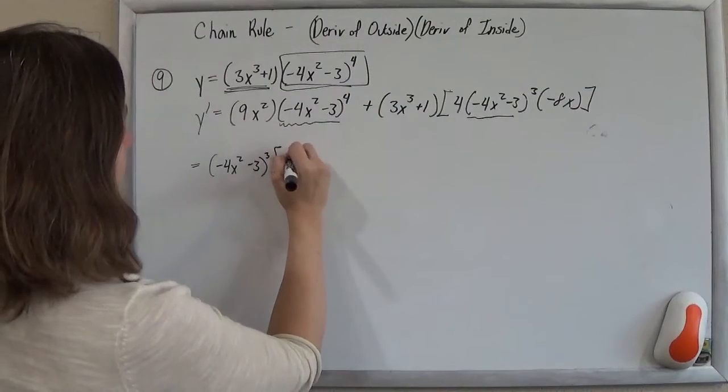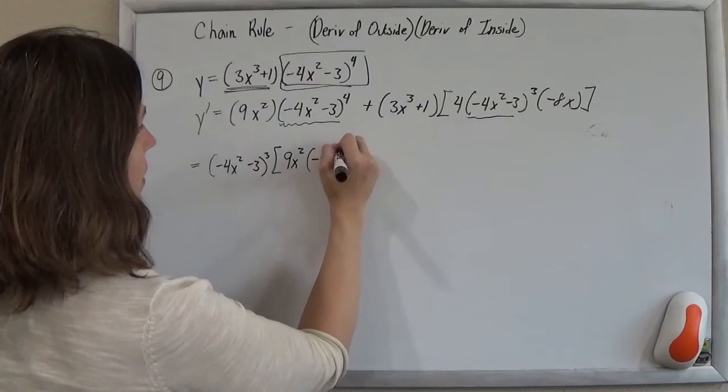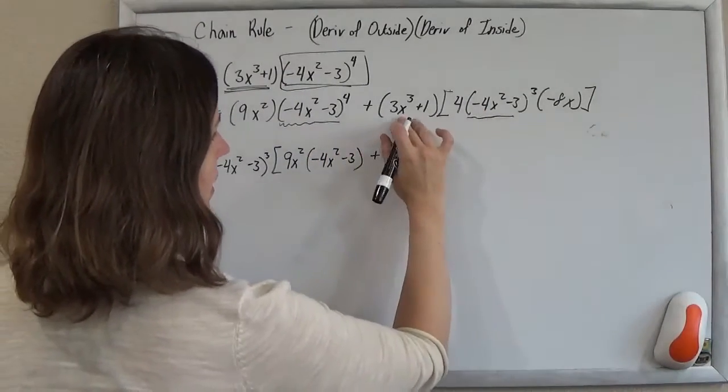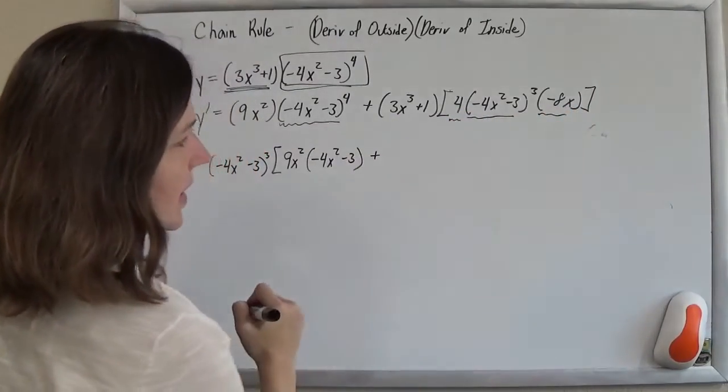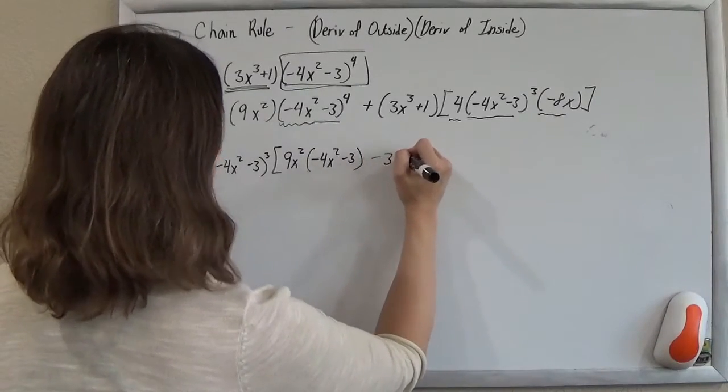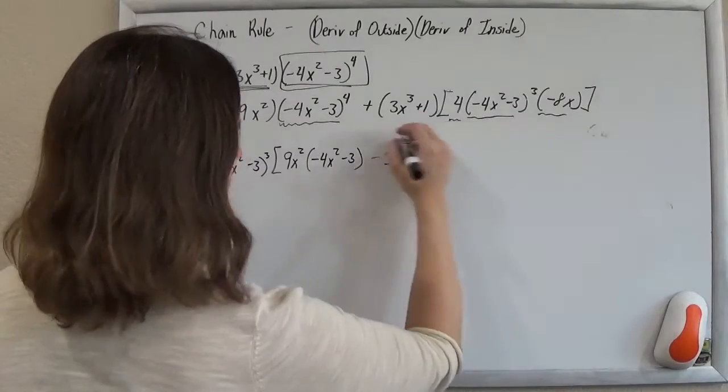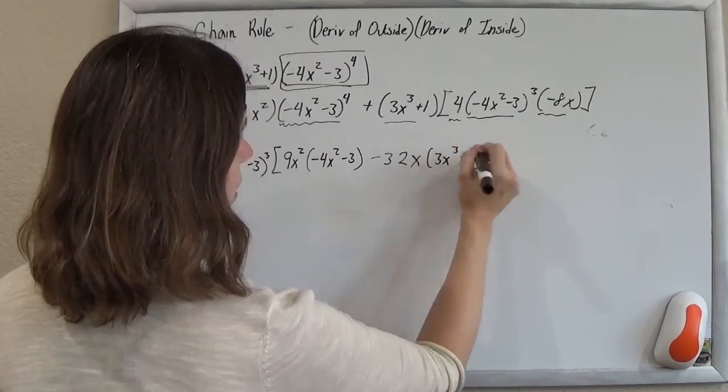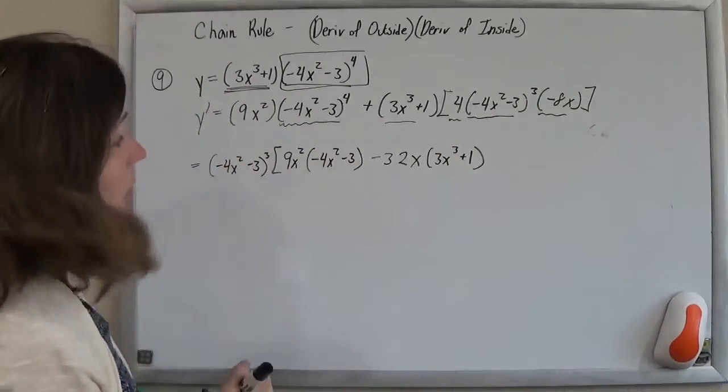And I'll have one more left over there. And then in this piece, I'll still have 4 times negative 8x is going to be negative 32x. And so, and then I've got the 3x cubed plus 1. And this guy was, all of it was taken out, so that guy was gone.